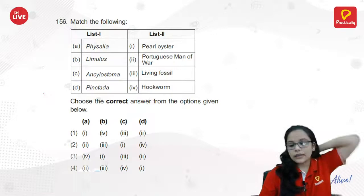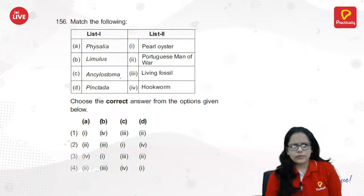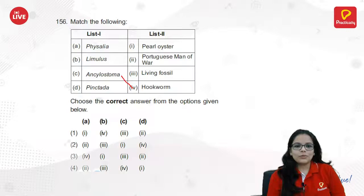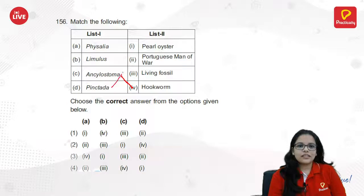Scientific names or examples: Cyclostomata corresponds to hookworm. Pinctada is pearl oyster. The answer is C4, and steep/deep option.